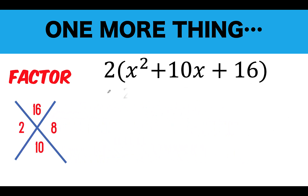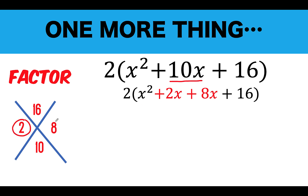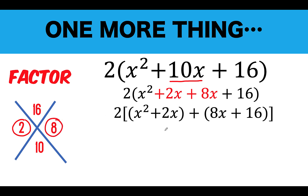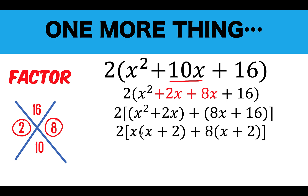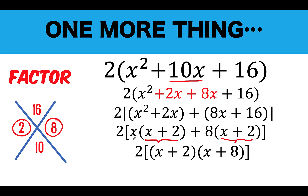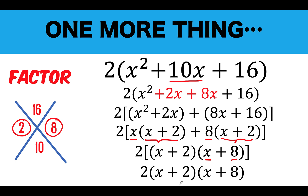Copy the 2 and x², then split 10x as 2x + 8x, and perform factoring by grouping. The common factor in the first group is x, giving x(x + 2). The common factor in the second group is 8, giving 8(x + 2). Then x + 2 is common again, so factor it out to get (x + 2)(x + 8). Removing the grouping symbol gives the factored trinomial x² + 10x + 16 = (x + 2)(x + 8).